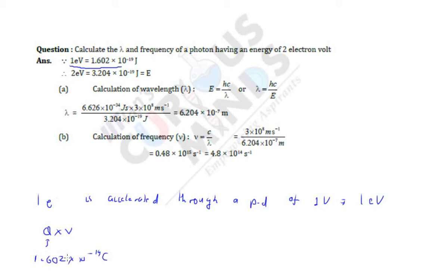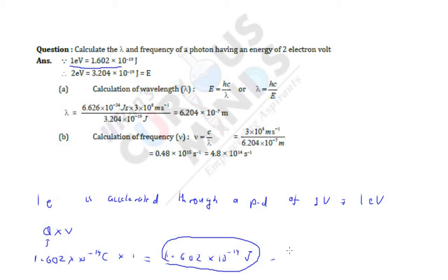The charge carries units of Coulombs — always remember. So 1 electron is carrying 1.602 into 10 raised to minus 19 Coulombs, and if it is accelerated through a potential of 1 volt, this gives 1.602 into 10 raised to minus 19 Joules. The unit of energy is Joules. This whole term is called 1 electron volt — that is the meaning of 1 electron volt.